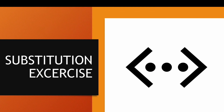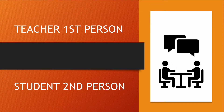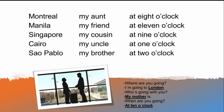Substitution exercise. Teacher first person, student second person. Where are you going? Who's going with you? When are you going? Where are you going? Who's going with you? When are you going?